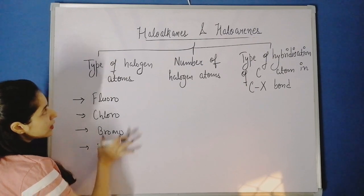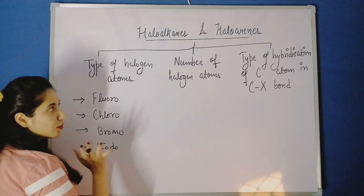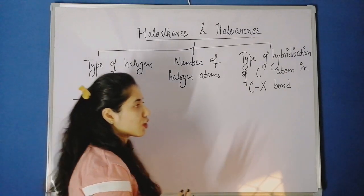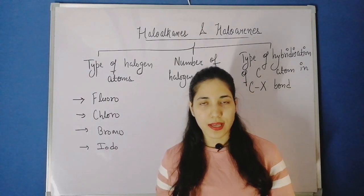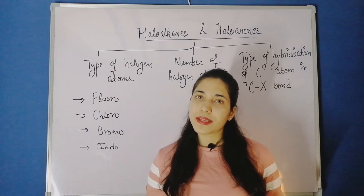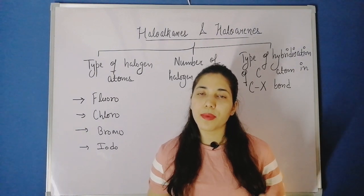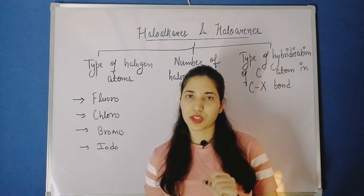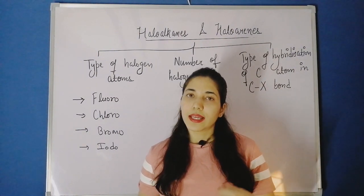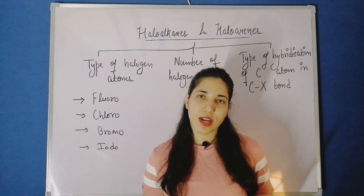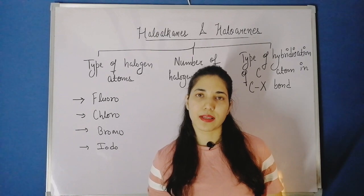The second classification is on the basis of the number of halogen atoms present — how many halogen atoms are there in the compound?